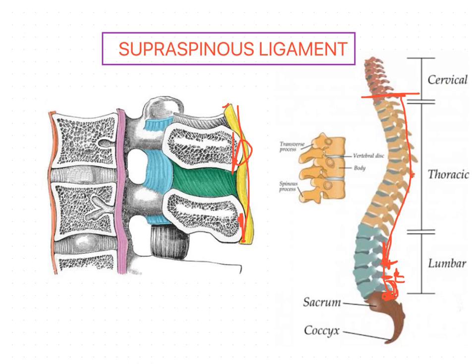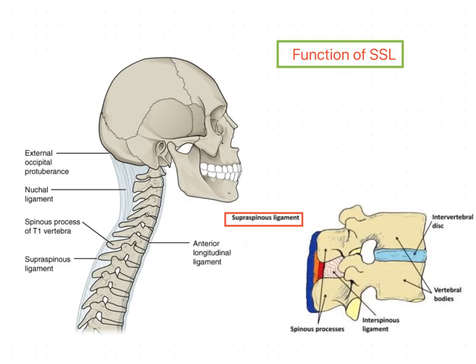Above the cervical region, the supraspinous ligament extends as the nuchal ligament, from C7 to the external occipital protuberance. This nuchal ligament is also called the ligamentum nuchae.